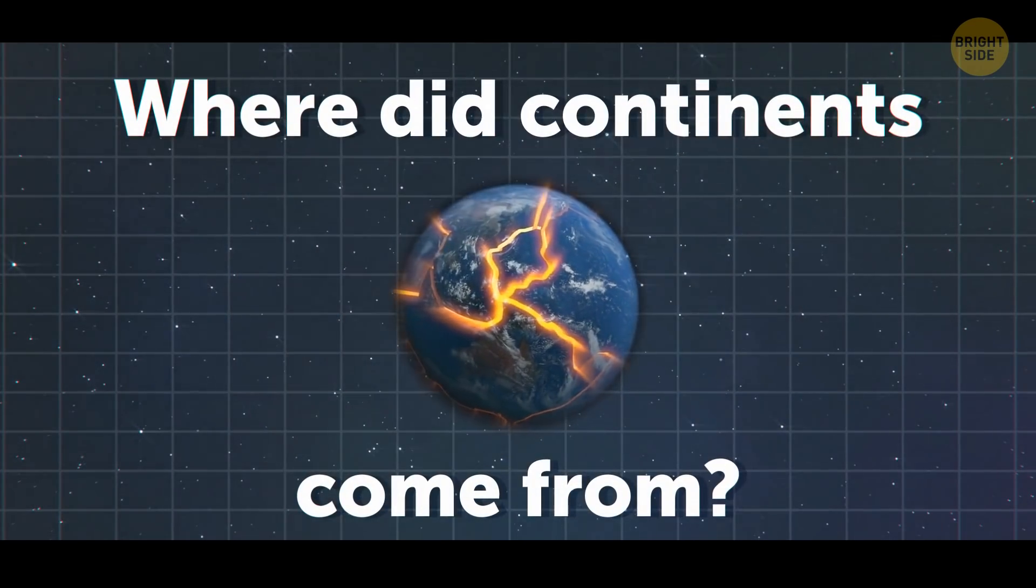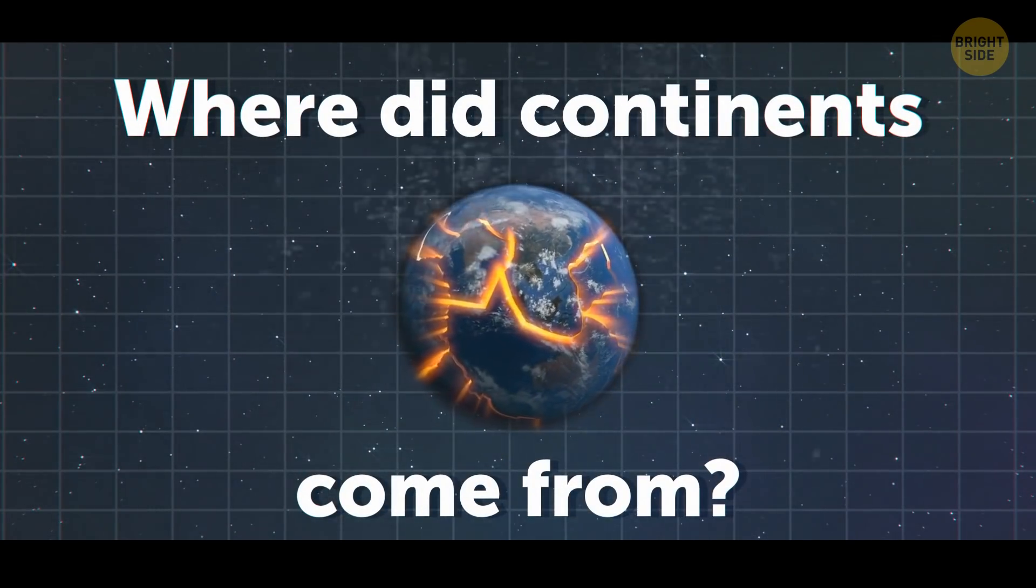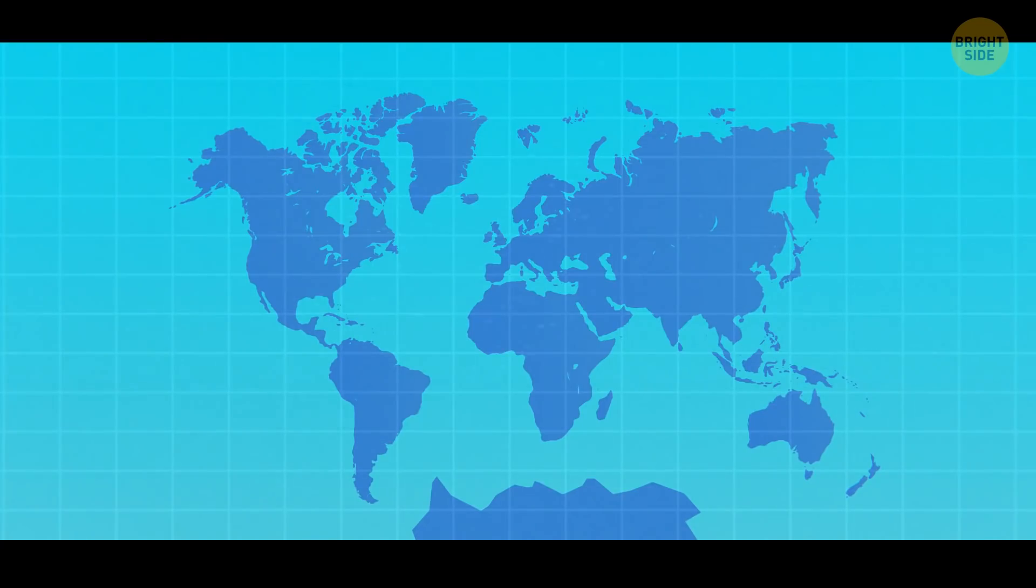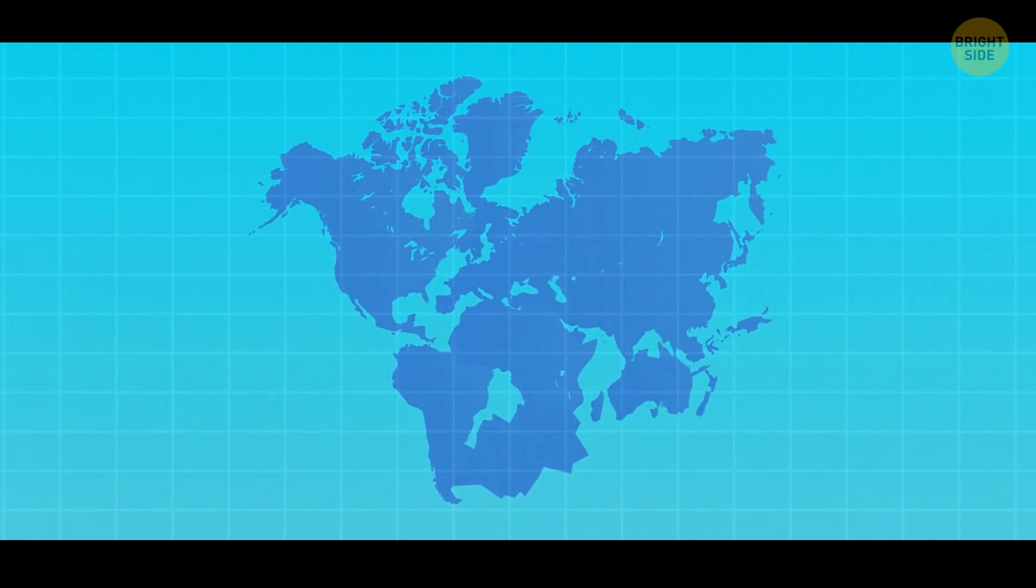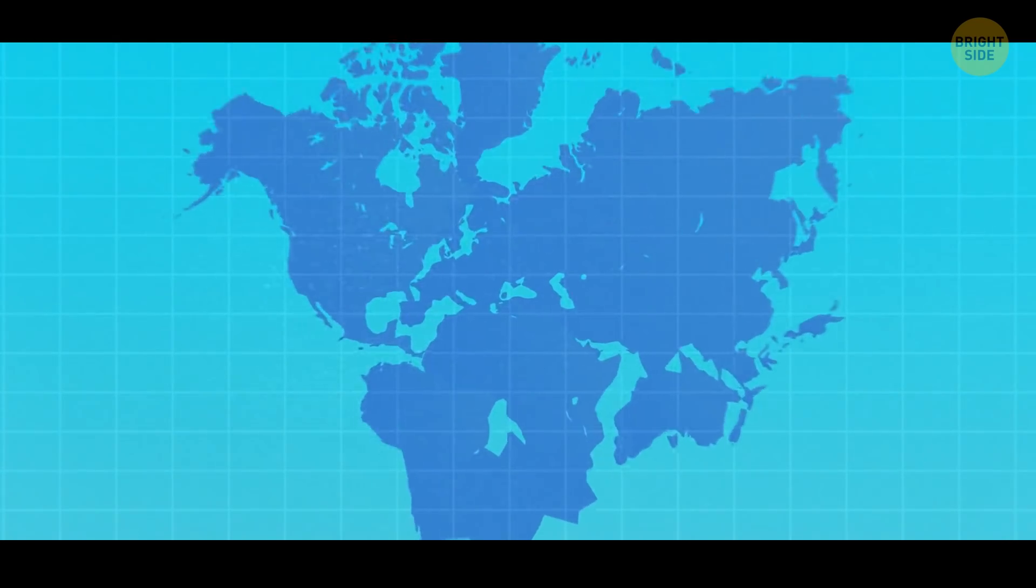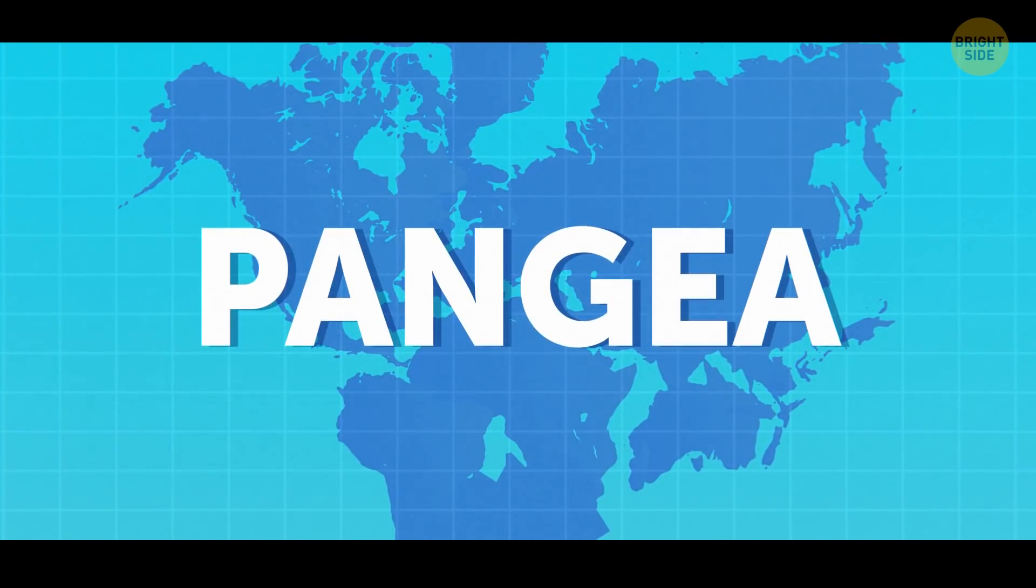So, where did all these continents come from in the first place? Well, if you've ever looked at a globe or a map, you've probably noticed that the two great landmasses surrounding the Atlantic Ocean—North and South America on one side, and Europe and Africa on the other—seem like puzzle pieces that could be pushed together to form one even more gigantic mass. You might also know that there's a name for that mass: Pangaea.